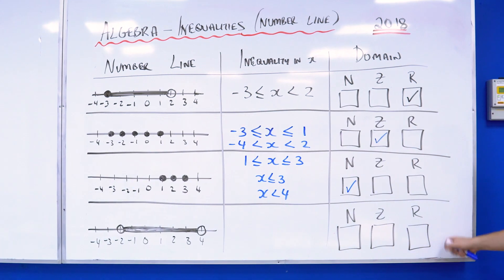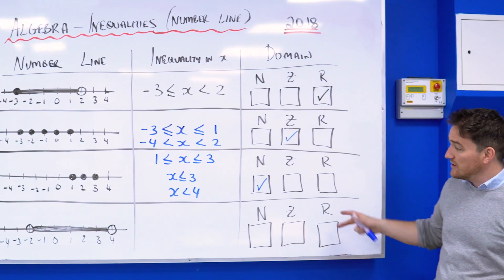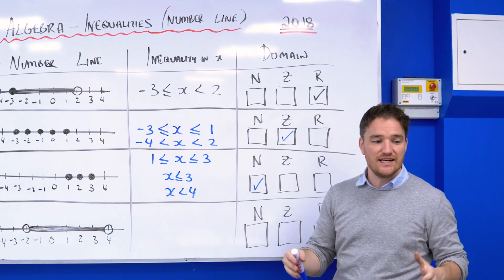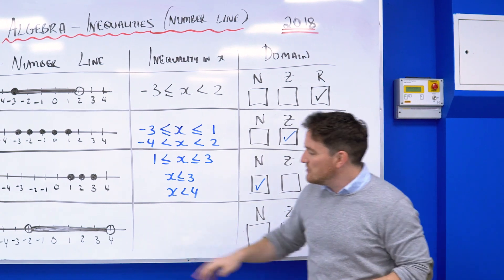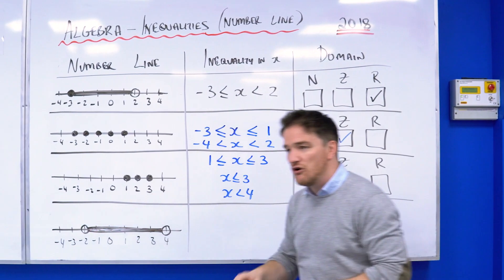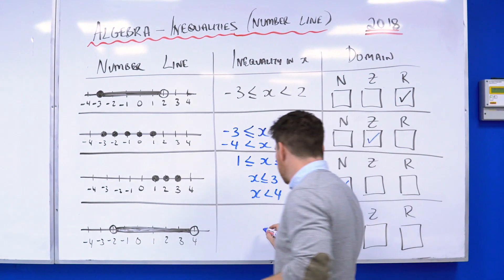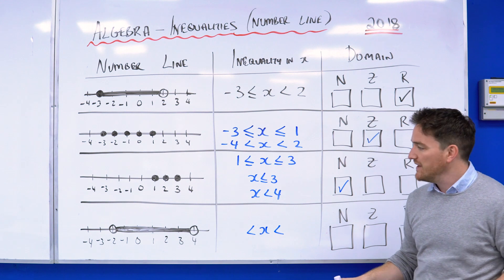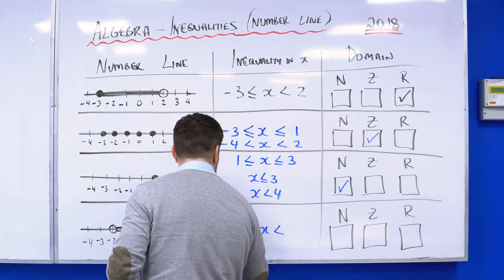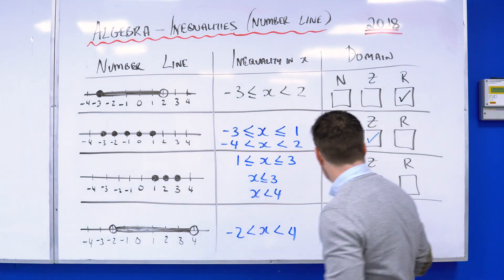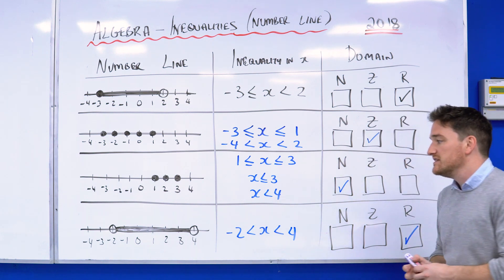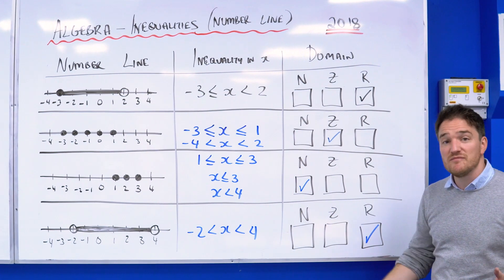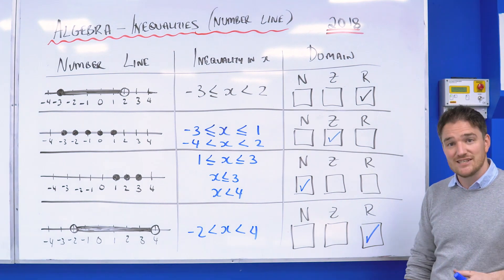The last one is real — a giveaway. The line is shaded and there are two open circles at each end, so no equal-to signs, meaning x is sandwiched without equal-tos: minus two is less than x, which is less than four. So finally, real, minus two to four. That's a full paper question that you have five minutes for — done in about a minute. Best of luck!